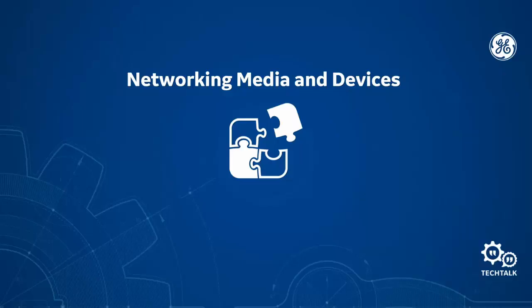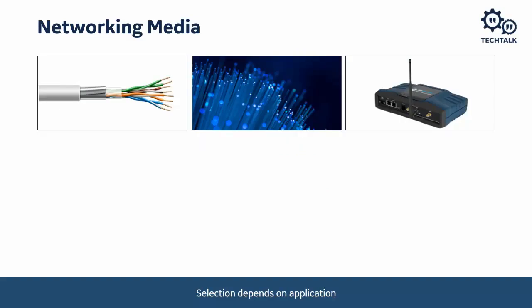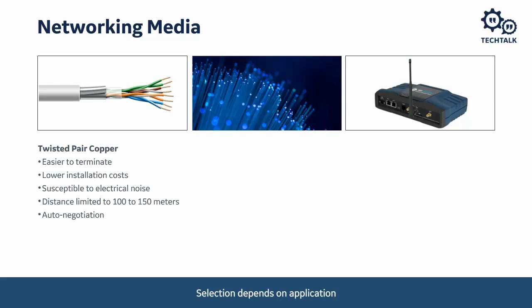Let's get familiar with the media types and devices typically found in a substation network. There are three basic types of networking media. Most of us are familiar with the twisted pair copper, commonly used RJ45 cable — there are different categories of these cables. The advantage is they are easy to terminate, being copper connections at lower installation cost. The disadvantage is they can be susceptible to electrical noise and are limited in distance, but they can auto-negotiate the speed, supporting 10 megabits, 100 megabits, and 1 gigabit interfaces.